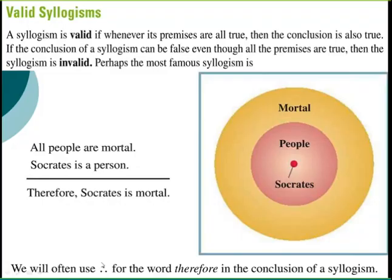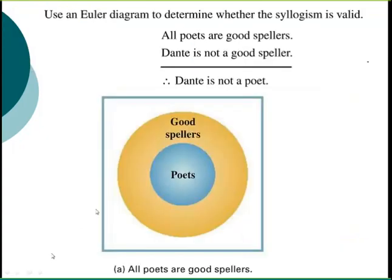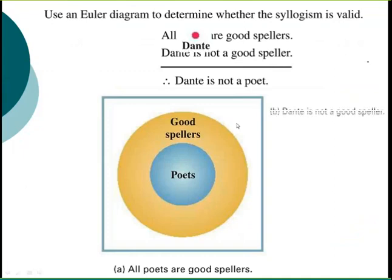The three-dot symbol means 'therefore.' Now let's look at an Euler diagram to determine whether this syllogism is valid: all poets are good spellers, Dante is not a good speller, therefore Dante is not a good poet. Here's good spellers, and poets are inside of that circle. Dante is not a good speller, so Dante is outside the circle — therefore Dante is not a poet. This is a valid syllogism.